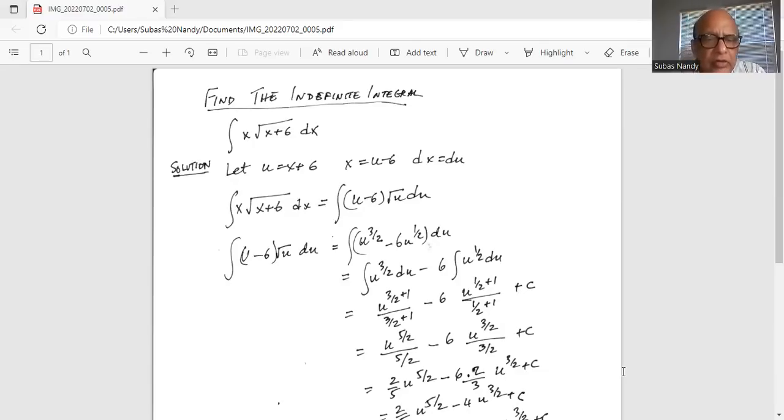Now we will do the integration of u to the power of 3 by 2 du minus 6 u to the power of half du. Now we're using the formula of integration: u to the 3 by 2 du is equal to u 3 by 2 plus 1 divided by 3 by 2 plus 1 minus 6 u half plus 1 divided by half plus 1 plus c.